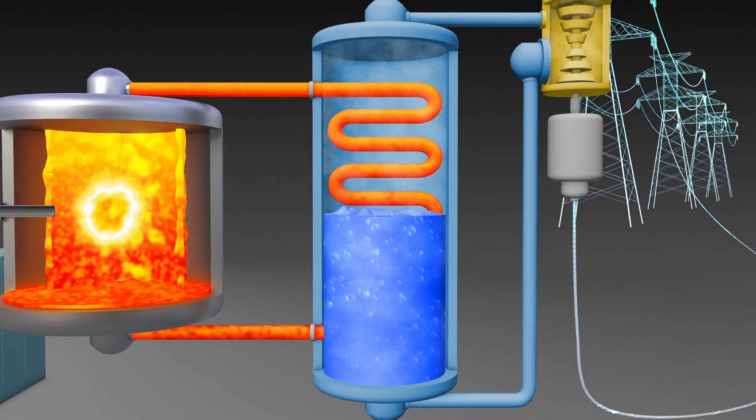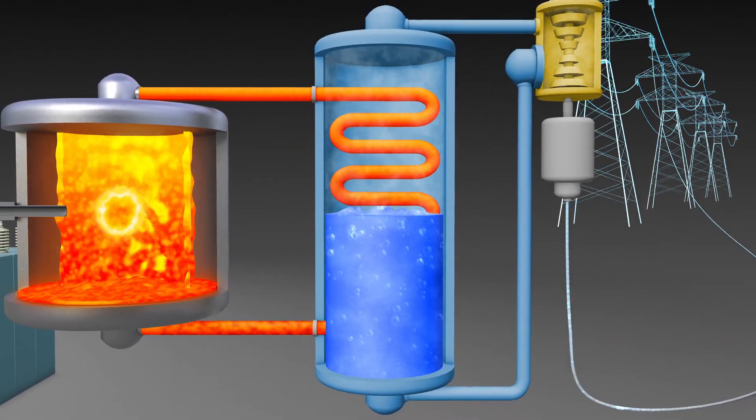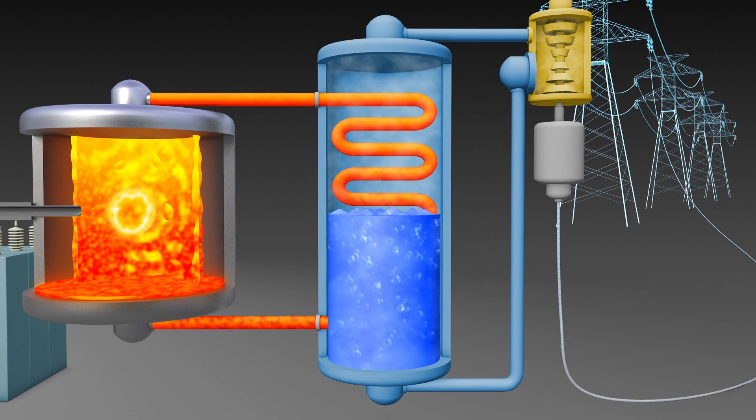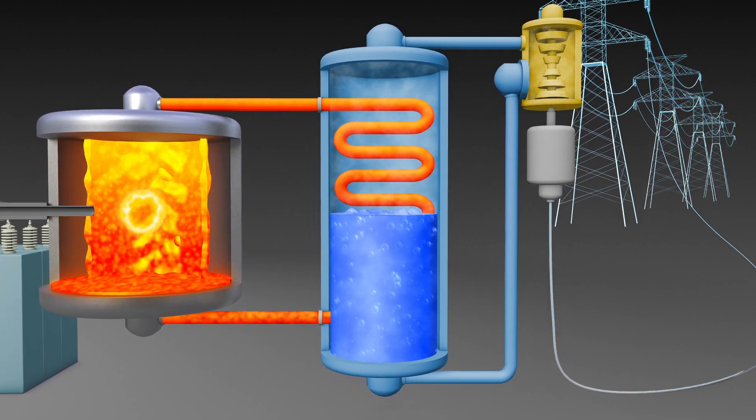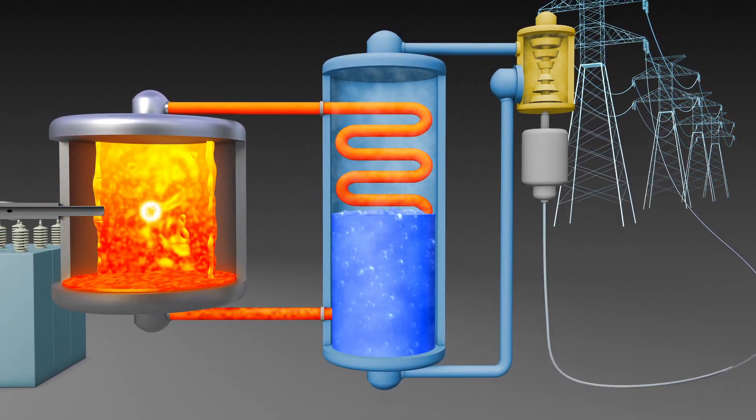Fusion heated molten salt is then pumped through a conventional heat exchanger, producing steam to spin a turbine and generator for clean, compact, always-on electricity.